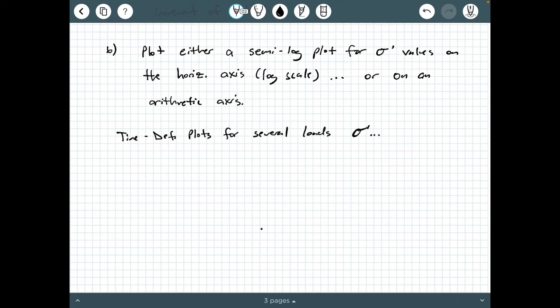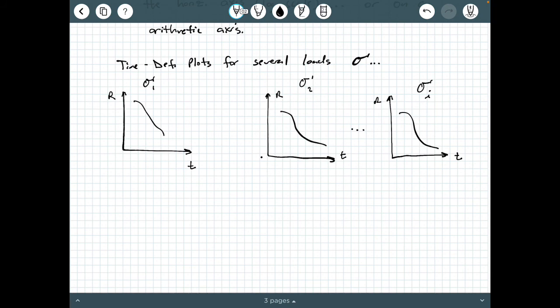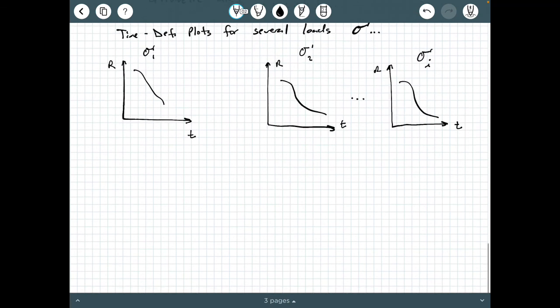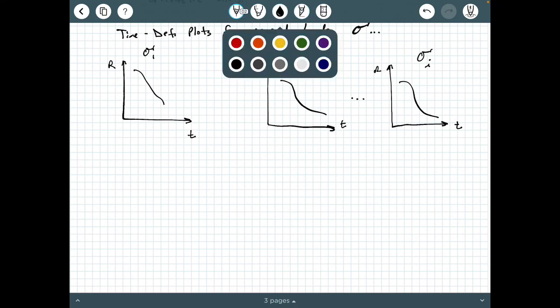Let's visualize this. What you would have is time deformation plots for several loads sigma prime. For example, you'd have a dial reading and time value with some kind of time deformation plot for sigma prime 1, then time and dial reading for sigma prime 2, and so on for sigma prime sub i. Normally these plots, you'd have one for every day that you ran the test. A consolidation test takes five to eight days depending on how many load increments you have.